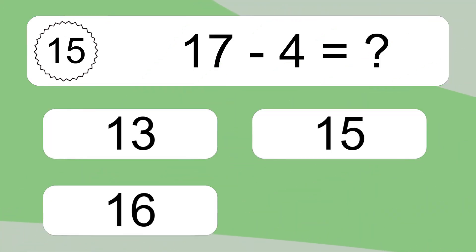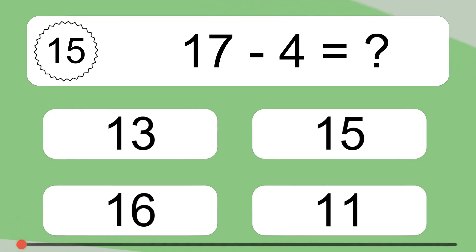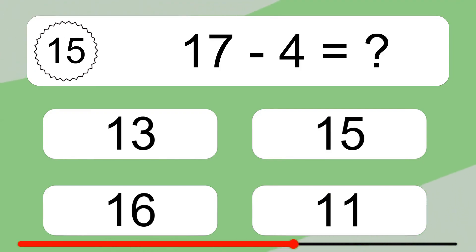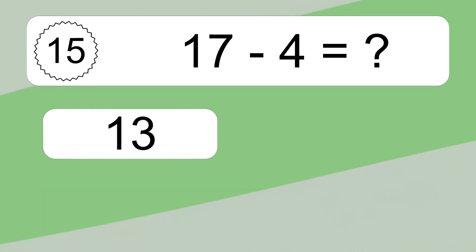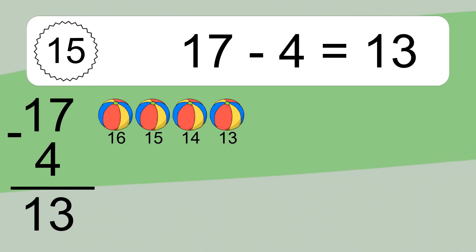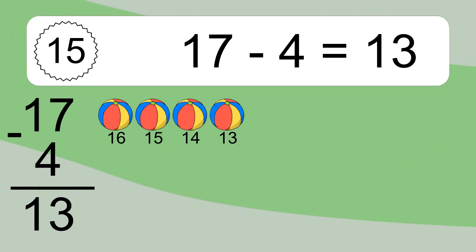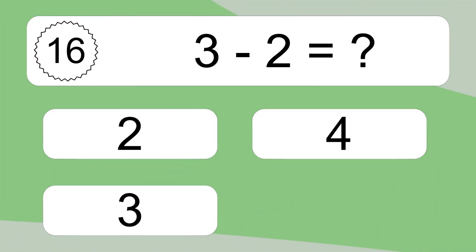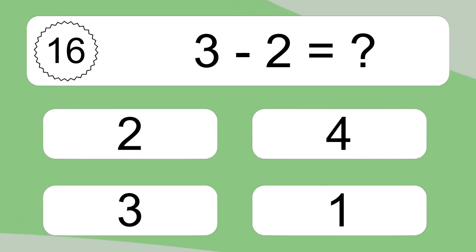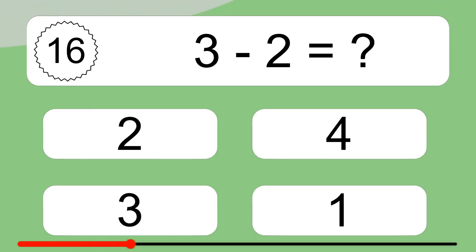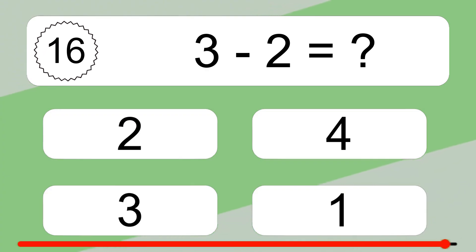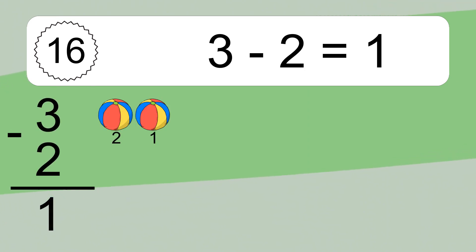17 minus 4 equals what? 17 minus 4 equals 13. Let's count it: 16, 15, 14, 13. 3 minus 2 equals what? 3 minus 2 equals 1. Let's count it: 2, 1.